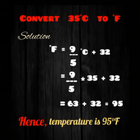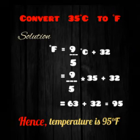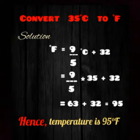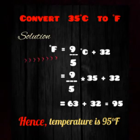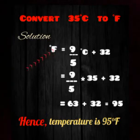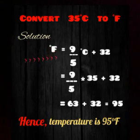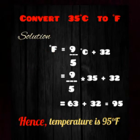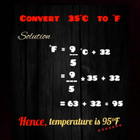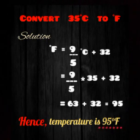Let us take another example. Convert 35 degrees Celsius to degrees Fahrenheit. Here we have to convert it into the Fahrenheit scale, so putting the formula: degree Fahrenheit is equal to 9/5 into degree Celsius plus 32. Putting the values and solving the equation, we get 95 degrees Fahrenheit. So 35 degrees Celsius is equal to 95 degrees Fahrenheit.